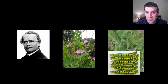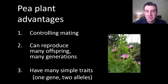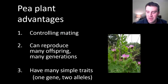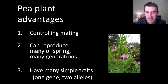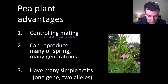The pea plant is a wonderful model organism for studying simple genetics for several reasons. Mendel got lucky here, but you can easily control who mates with who by taking pollen from one plant and brushing it onto another. You can even snip off the pollen to make sure they don't pollinate anybody else. You can even self-pollinate pea plants — having one plant serve as both the mother and the father.